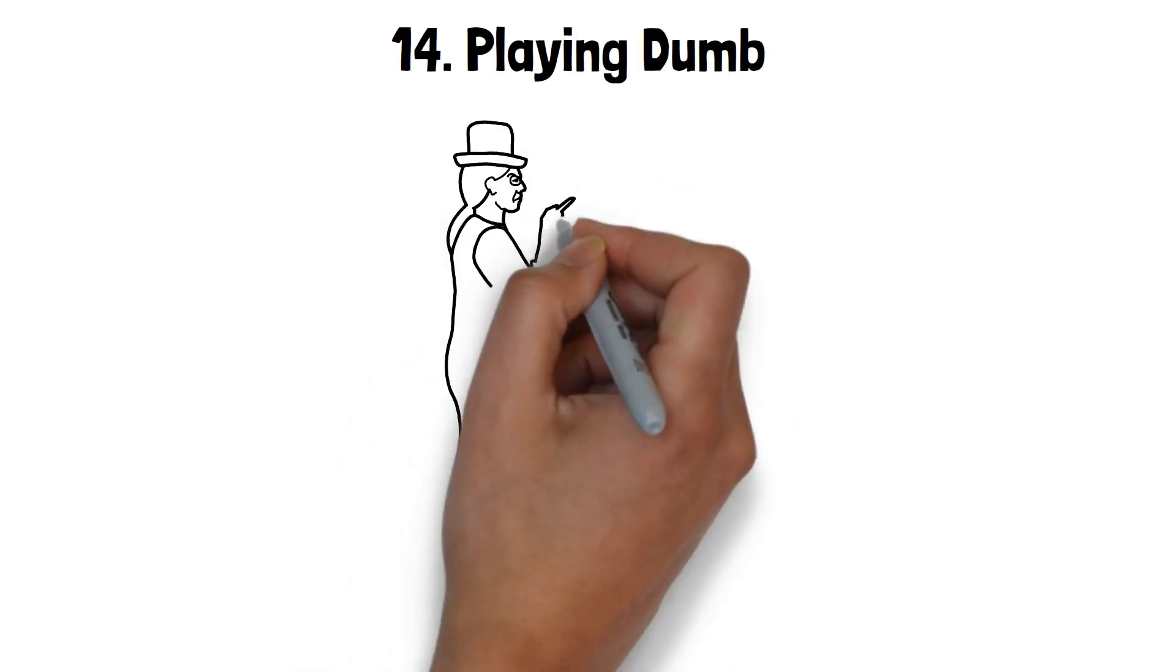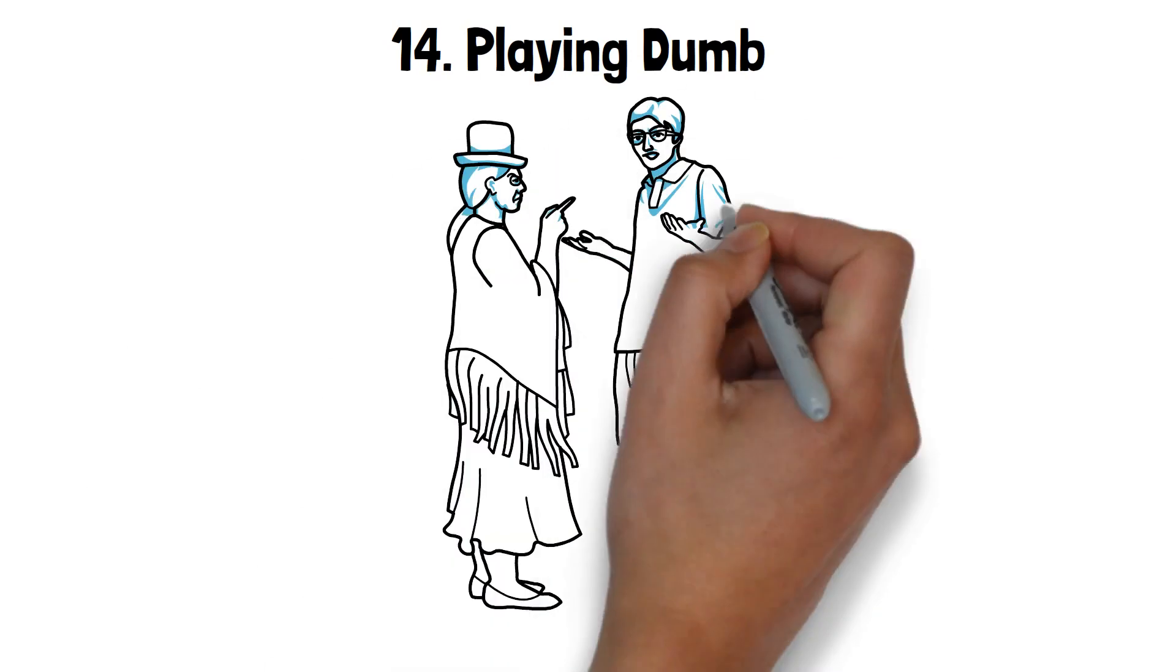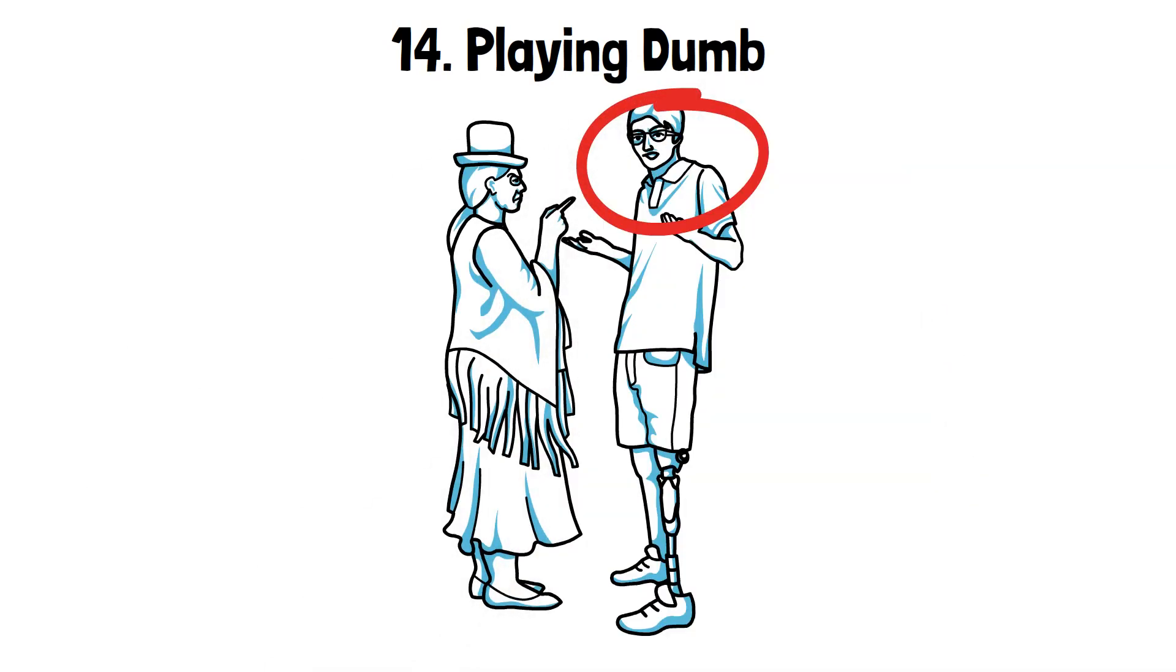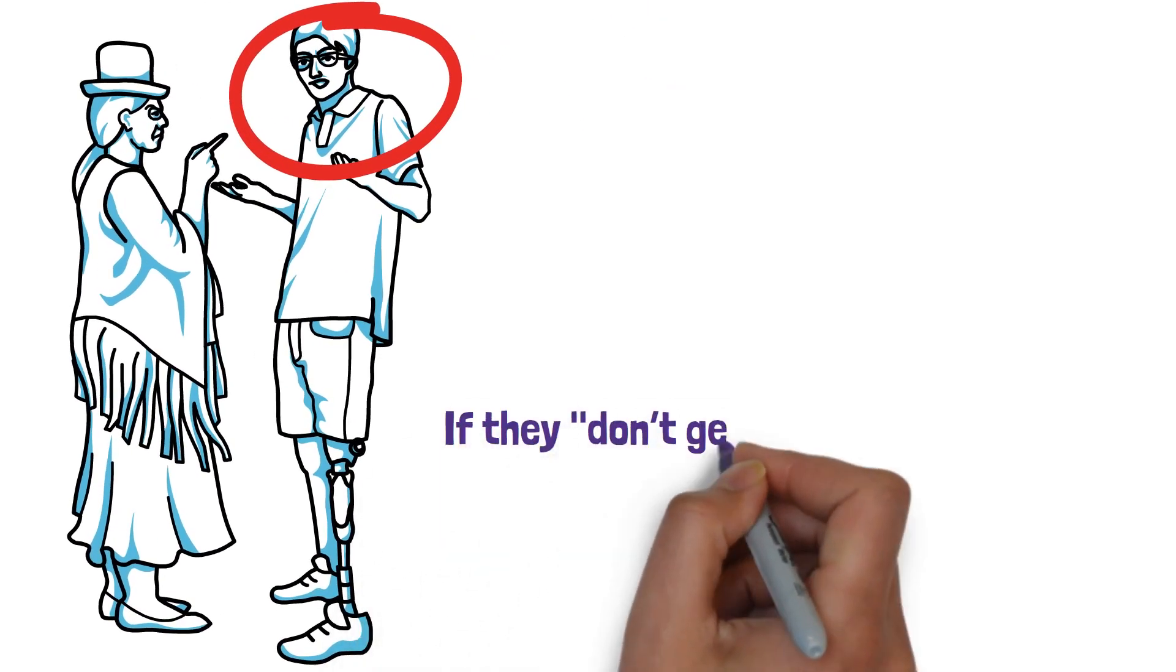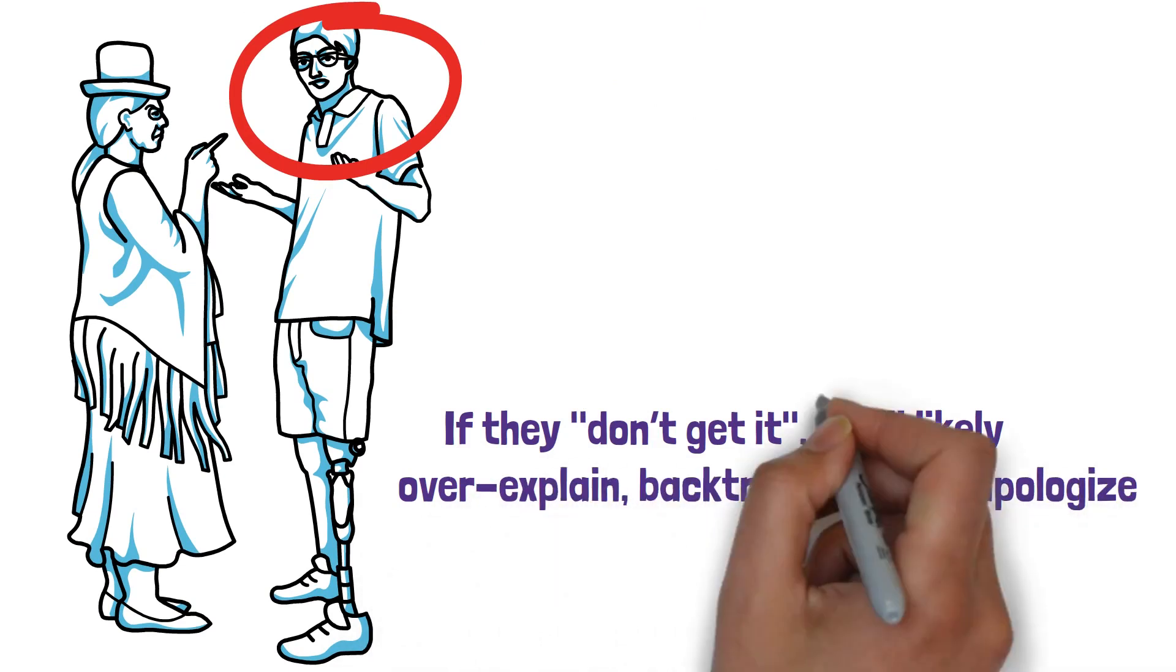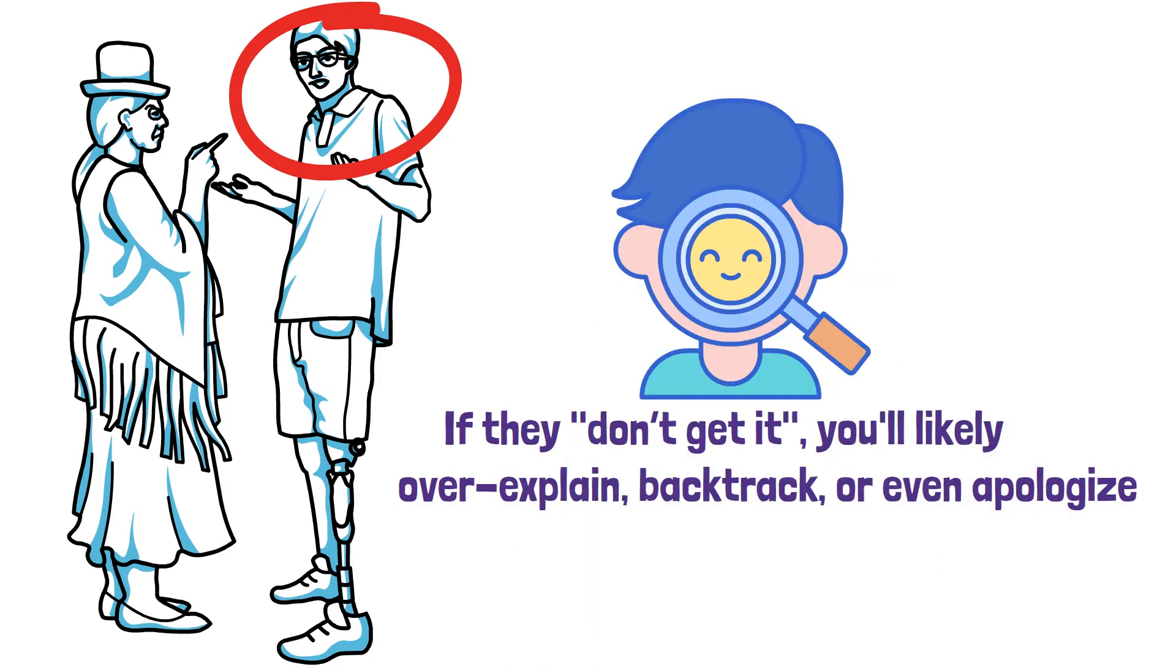14. Playing dumb. This might be one of the most infuriating tactics they use. You know they understand what you're saying or asking, but they'll pretend otherwise. It's a tactic to avoid responsibility or to make you doubt yourself. If they don't get it, you'll likely over-explain, backtrack, or even apologize. Over time, this can lead to self-doubt and a hesitancy to bring up issues.